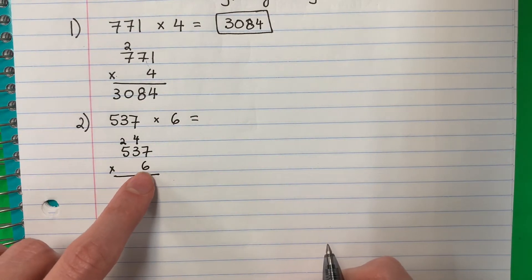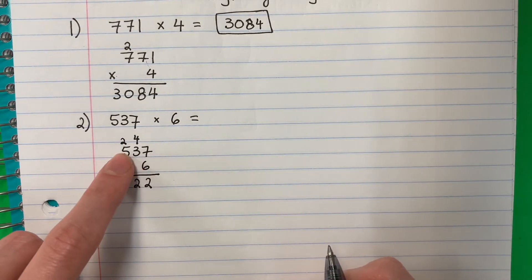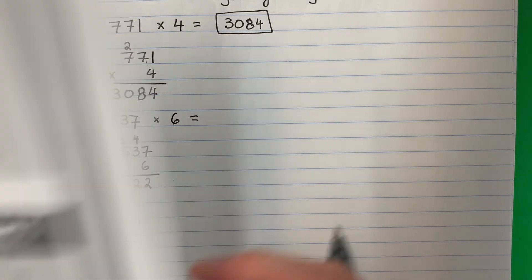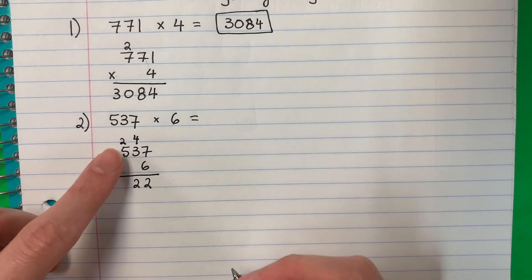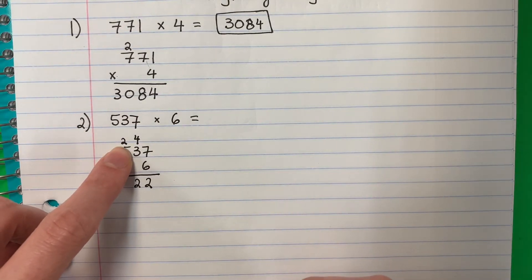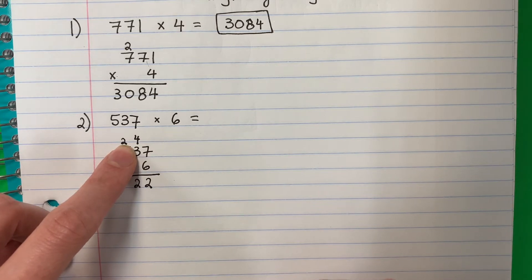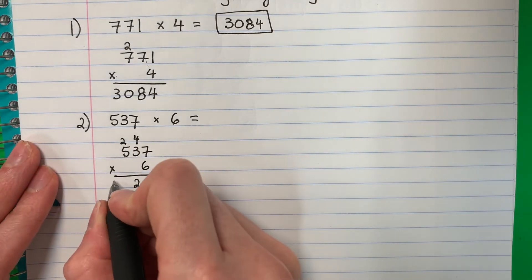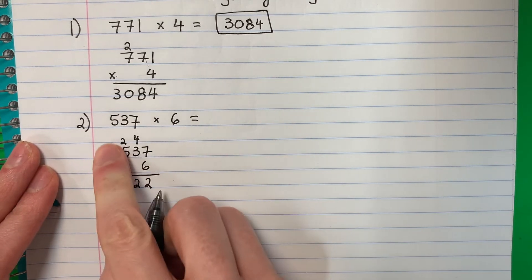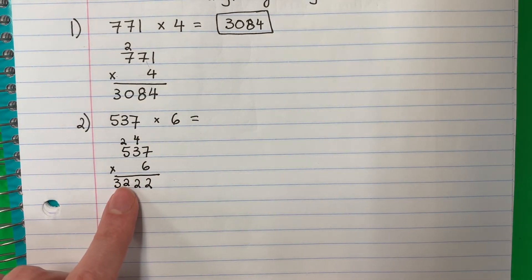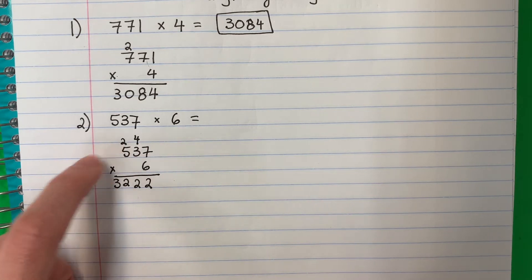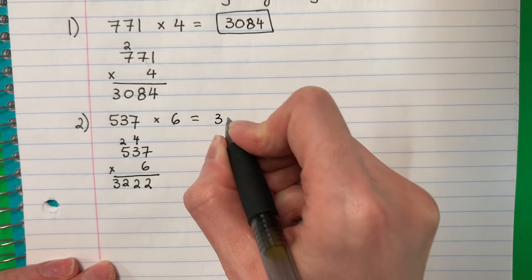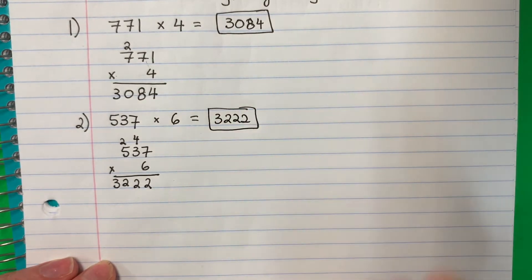Again, otra vez. Six times five. Seis por cinco. Six times five. Thirty. Treinta. So 30. But I have a two. Treinta. Pero tengo dos. So 30 plus two. Treinta más dos. 32. And I will write the whole thing because I don't have another number here. Okay, treinta y dos aquí. Voy a escribir todo porque no tengo un número aquí. So this is my answer. Three, two, two. And circle your answer.